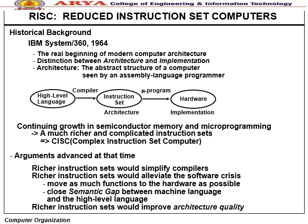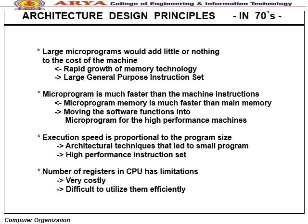Architecture design principles of CISC: A large microprogram adds little to cost due to rapid growth of memory technology. Microprogrammed memory is much faster than main memory, so moving software functions into microprogram improves performance. Machine execution speed is proportional to program size. Architecture techniques that lead to small programs provide high performance. However, the number of registers in a CPU has limitations — it is costly and difficult to utilize efficiently.